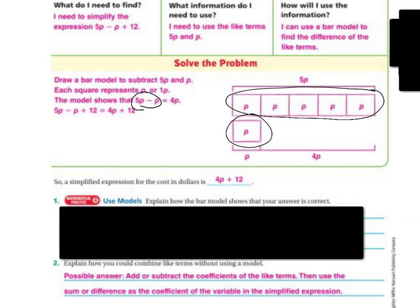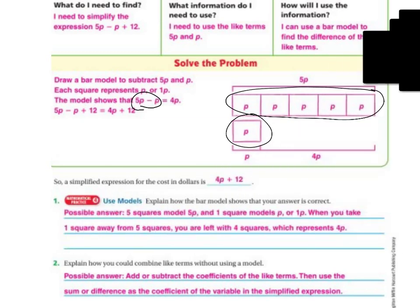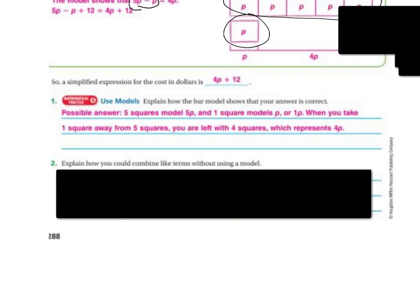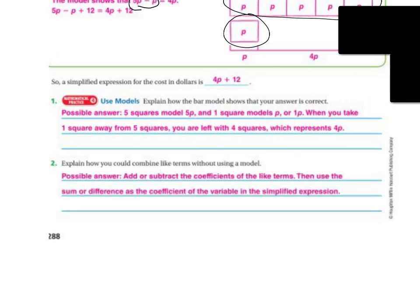Now let's use the models to explain how the bar model shows that your answer is correct. Well, the 5 squares model 5P, and 1 square is the 1P, and when you take 1 square away from 5 squares, you're left with the 4 squares, which represents the 4P. Explain how you can combine like terms without using a model. Well, you can add or subtract the coefficients of the like terms, then use the sum or difference of the coefficients as the variables in the simplified expression.